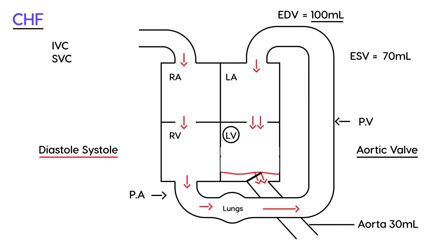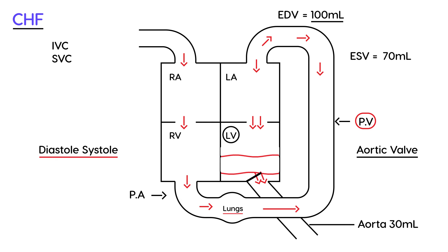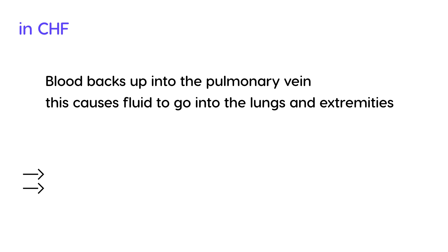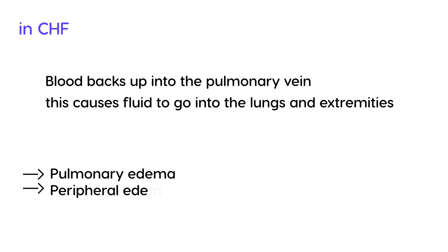Going back to the diagram, if the patient is in congestive heart failure, there is so much more blood left behind in the left ventricle that blood starts to back up into the pulmonary vein. This creates a problem because fluid can then go into the lungs and into the extremities. Fluid in the lungs is known as pulmonary edema, and fluid in the extremities is known as peripheral edema — those patients have swollen feet and swollen lower extremities, known as pitting edema.